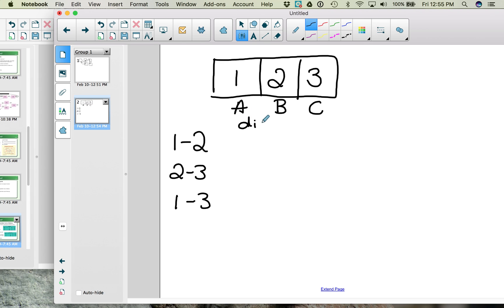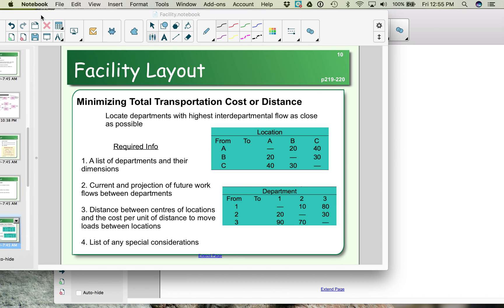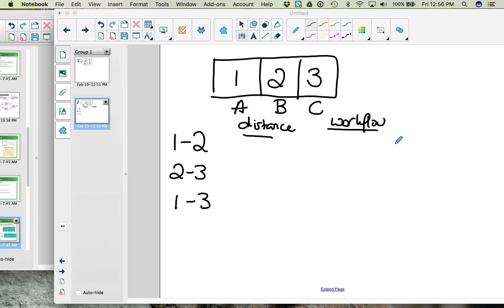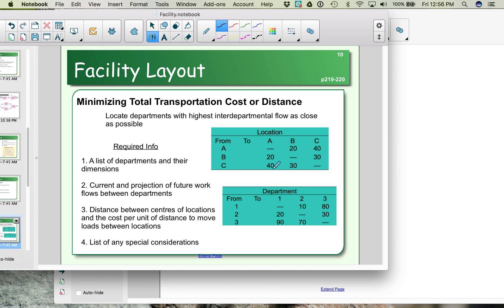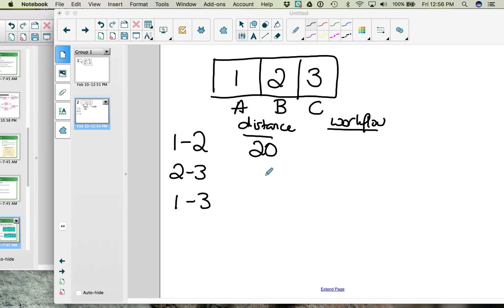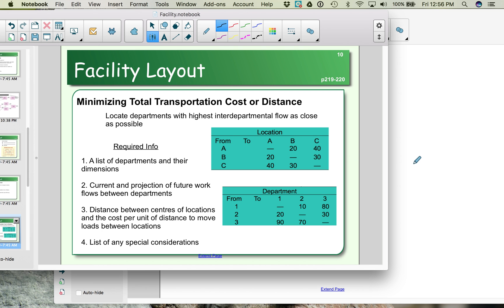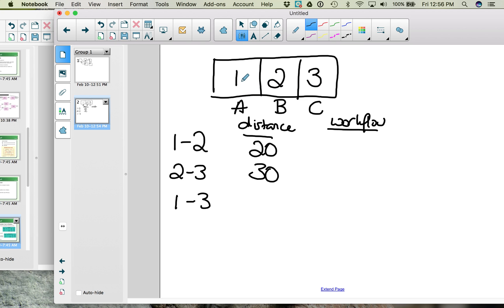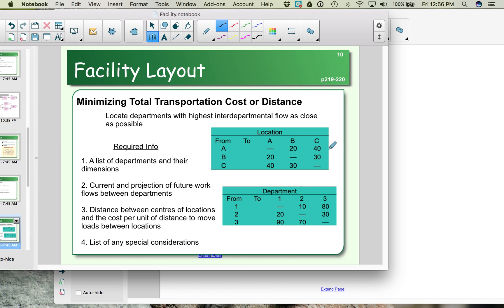Let's start by looking at the distance. Well 1 and 2 are in locations A and B. From location A to location B it's 20 meters apart, or from B to A again 20 meters apart. So our distance here is 20 meters. Between 2 and 3, that's location B and C. Location B and location C, so B and C are 30 meters apart. Locations A and C, that's where department 1 and 3 are located. A and C are 40 meters apart.